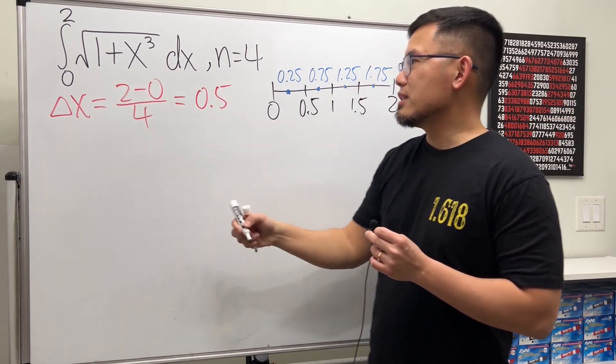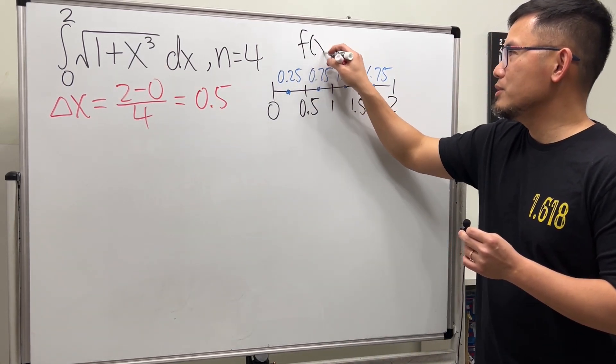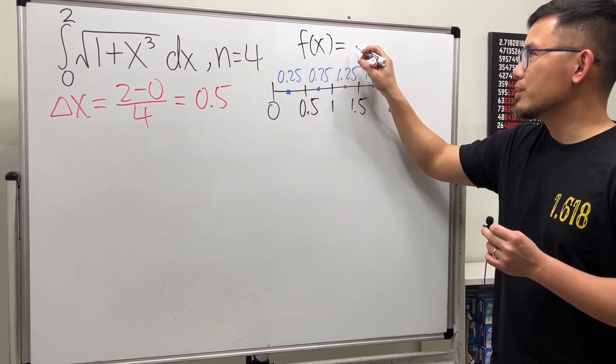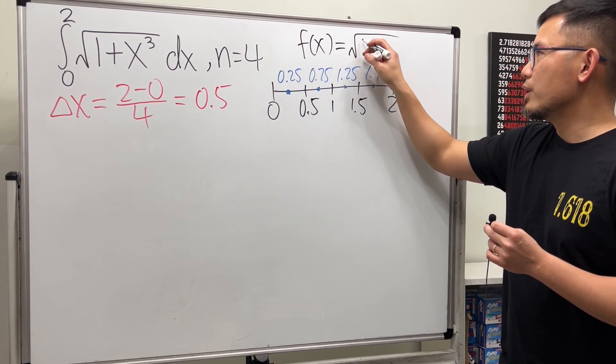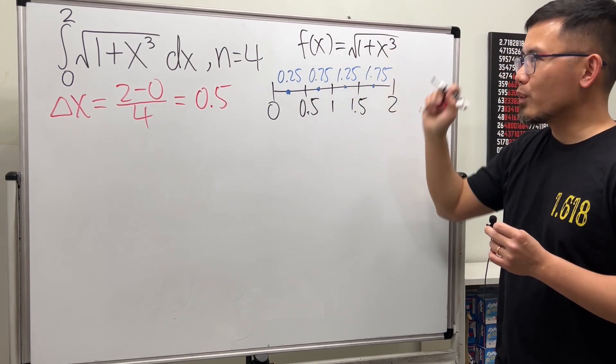This right here is of course our function, so let me denote that f(x) = √(1 + x³).